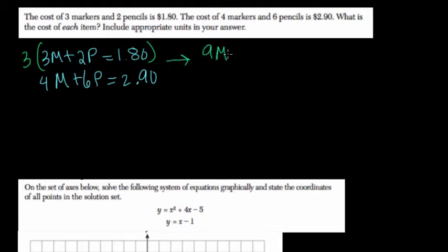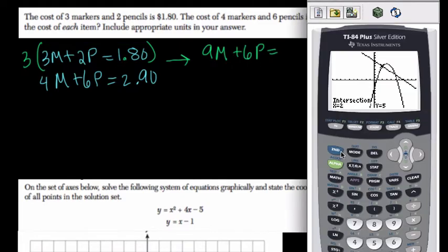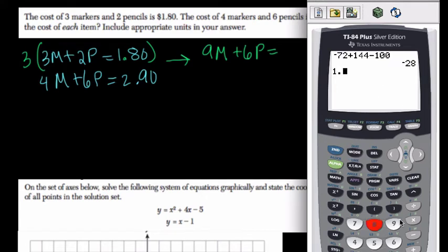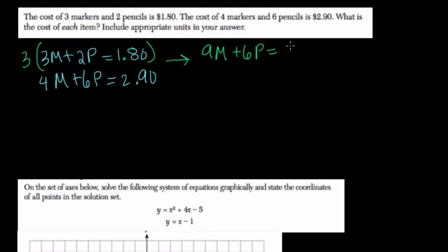So I get 9m plus 6p equals here $1.80 times 3. So you have the graphing calculator at your disposal. You can do 1.80 times 3 as well. 5.4, okay, so $5.40. And then 4m plus 6p equals $2.90.